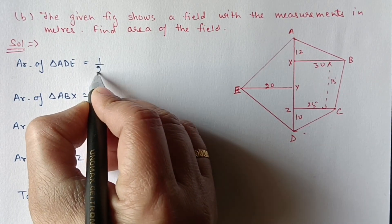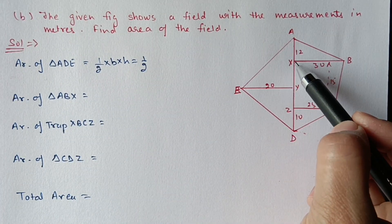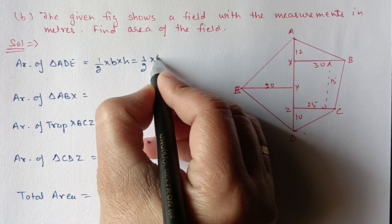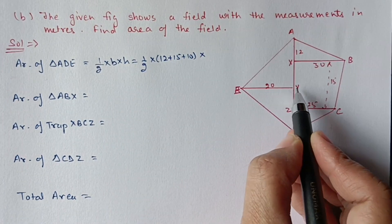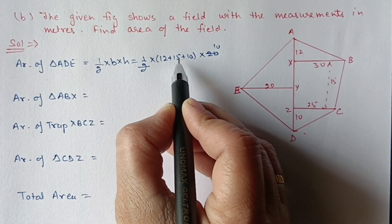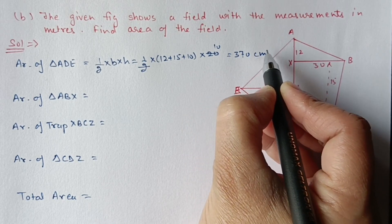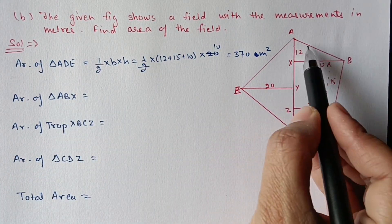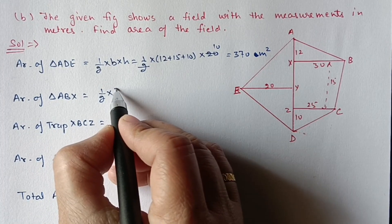Area of triangle ADE: half × base × height. Base is A to D: AX is 12, XZ is 15, and ZD is 10, so total base = 12 + 15 + 10 = 37. Height for this triangle is 20. So area = half × 37 × 20 = 370 m².